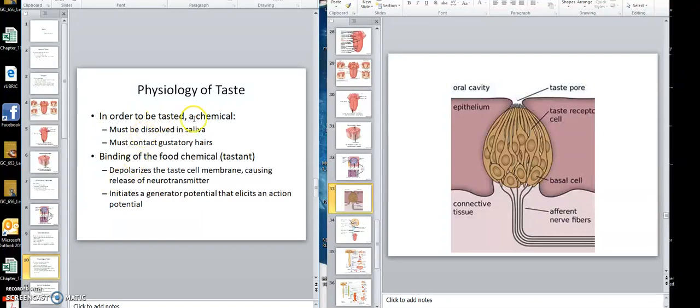In order to be tasted, a chemical must be dissolved in the saliva, must touch these hairs. Binding of the food depolarizes the taste cell membrane, releases neurotransmitter, which would be down here, and initiates a generator potential that elicits action potentials.